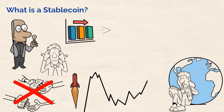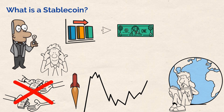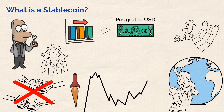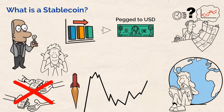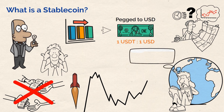Stablecoins are exactly what they sound like. While being cryptocurrencies the way Ethereum is, they differ in that they hold a stable value. This is because stablecoins are pegged to the value of their specific fiat currency pair. USDT, for example, is pegged to the value of the US dollar. Regardless of market volatility, stablecoins are designed to maintain their value on a one-to-one ratio with their peg.